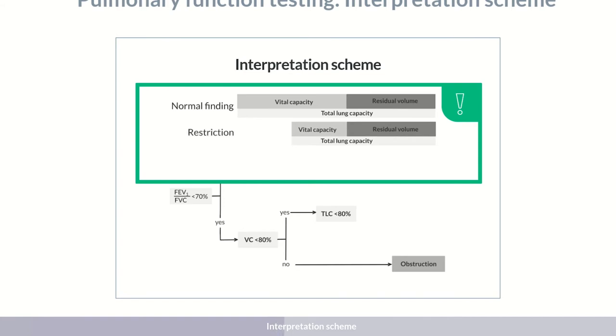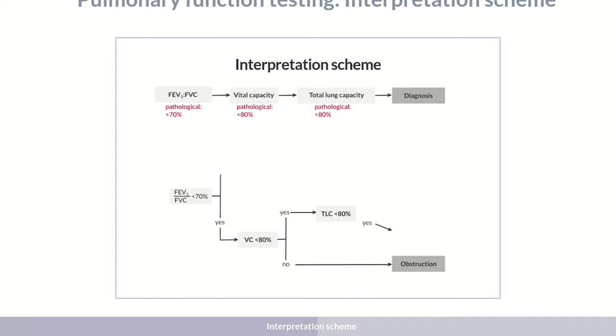If only the vital capacity is reduced and the total lung capacity within the normal range, this indicates hyperinflation. In hyperinflation, the vital capacity is reduced at the expense of an increased residual volume. If there is also a decreased total lung capacity, a combination of obstruction and restriction is present, that is, a mixed ventilatory defect.